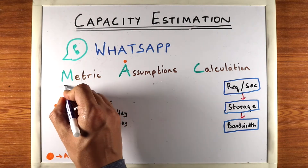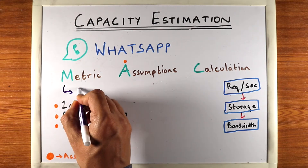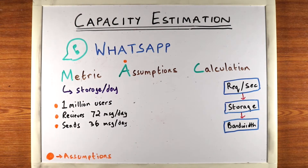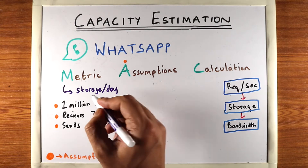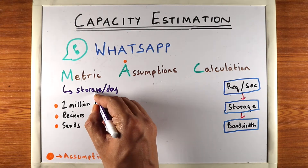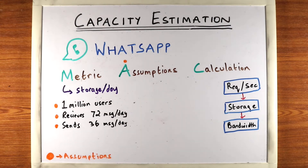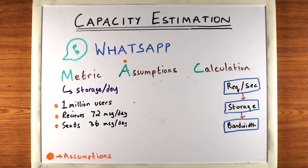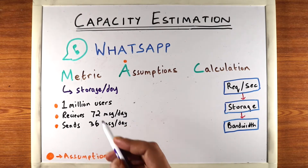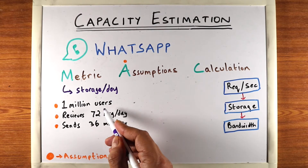Let's figure out how much storage per day our messaging app will use. We're going to look at storage just for the messages — we're not going to consider metadata, because we don't know at this point what our metadata is going to be. So when we do a very high-level capacity estimation, we just want to look at how much storage our messages will need.